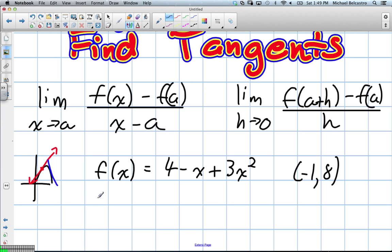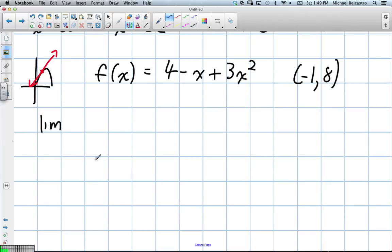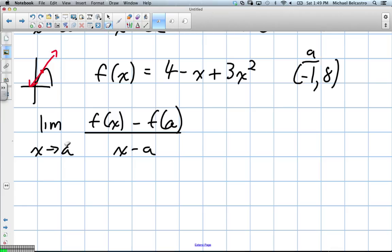Okay, so in the first question, our limit as x as it approaches a, and it was f at x subtract f at a divided by x minus a, right? Okay, well, in this case, it says a is negative 1, right? So it's as x approaches negative 1, we'll say in this question.